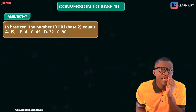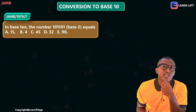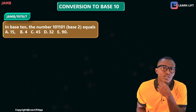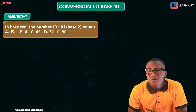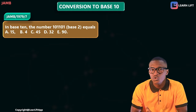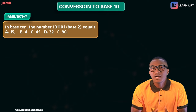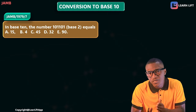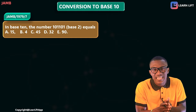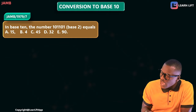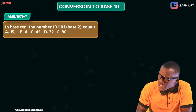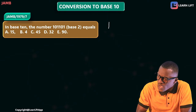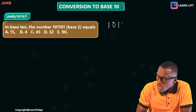The question says: in base 10, what is 101101 base 2? Now before they even tell us it is in base 2, you should know, because the highest digit there is 1. Every digit must be one less than the base. The number is 1 0 1 1 0 1.